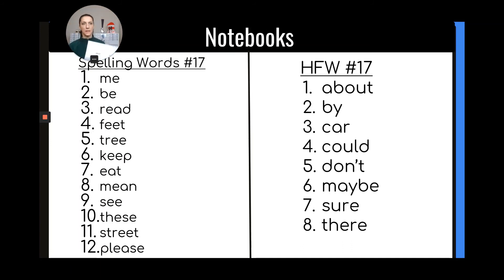You can do this like this. Cut out about by car and could like one big chunk. Just cut that big rectangle out. Those words and then paste them in your book. Then cut out these words. Don't maybe sure and there and paste them right underneath. And there you have them in alphabetical order. So that's it. You guys are going to get to work on that. So please, as soon as this video is done, pause the screen so you don't have to go get your parents. Pause the screen so that you can copy down your spelling words on the left page and then paste these words onto the right page. Make sure you do write though HFW number 17, just like it shows you, see my arrow over here, but then you'll paste your words in.